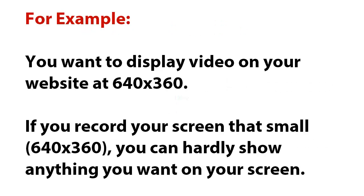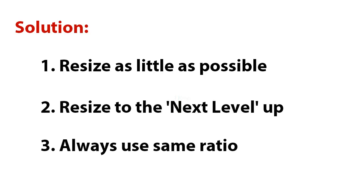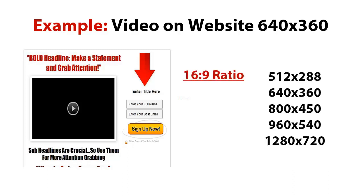For example, if I want to display a video on my website at 640 by 360, what happens is that when I'm recording my screen it's very, very small — I can hardly record anything because the area is so small. The solution is to resize as little as possible and go to the next size up. So if I'm displaying at 640 by 360, I can record at 800 by 450. I'm going to lose a little bit of quality, but it's still going to look pretty good and pretty sharp.